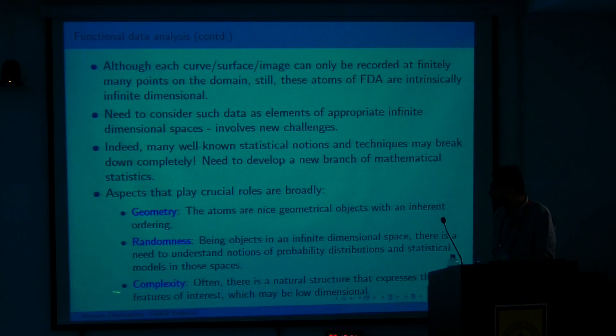Three essential things play a very important role in developing statistical methods for functional data: geometry, randomness, and complexity. The geometry matters because functions have an inherent ordering — if I have a function observed over time, I cannot simply juxtapose different time points, as that would give a completely different function. There is an inherent infinite dimensional geometry that one has to account for in order to develop proper statistical methods.